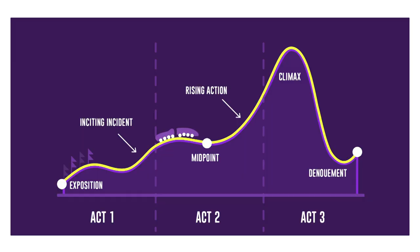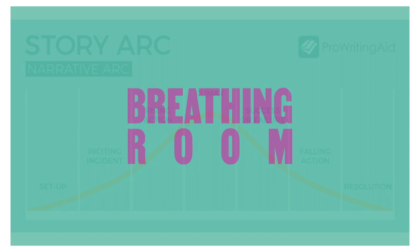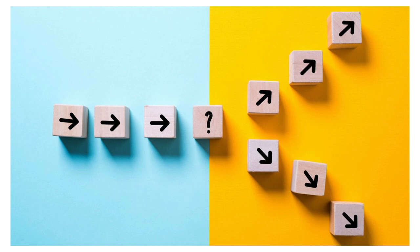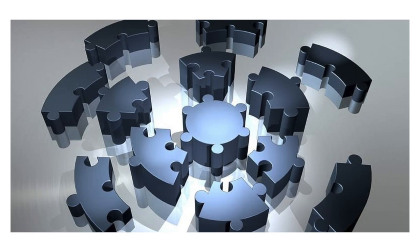Tip number three: let your characters make decisions for you. Although it's very important to have an idea of your film structure before you do any writing, you also want to allow for the story to unfold organically and naturally, and the only way to do this is to give your character some breathing room. Rather than forcing your character into an arc and dictating all of their actions before even writing the words fade in, try to let your characters make their own decisions that will move your story forward.